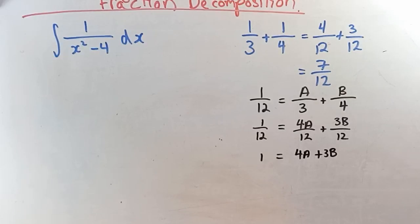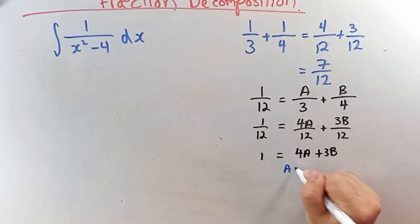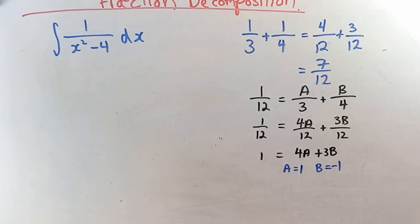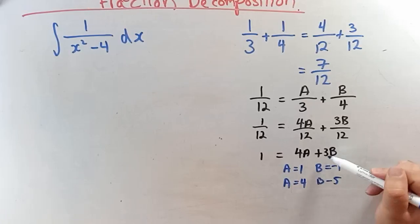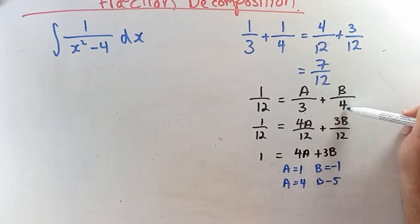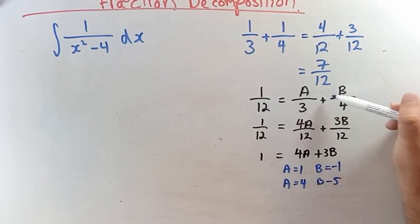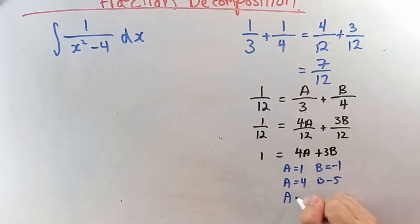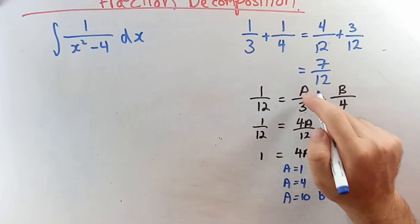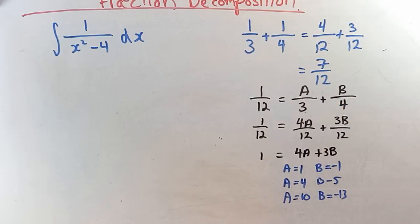Solutions could be a equals 1 and b equals negative 1, giving 4 minus 3 equals 1. Or a equals 4 and b equals negative 5, giving 16 minus 15 equals 1, meaning 4/3 minus 5/4 equals 1/12. Multiple solutions exist, and this is basically how partial fraction decomposition works.